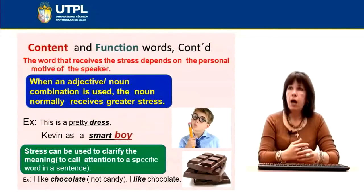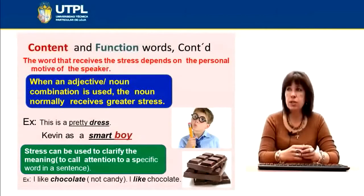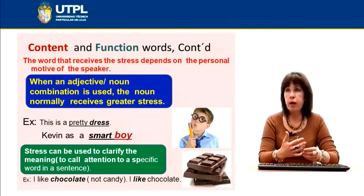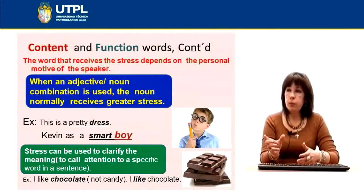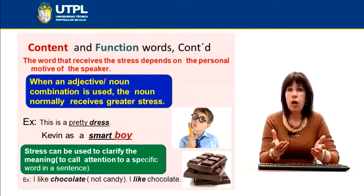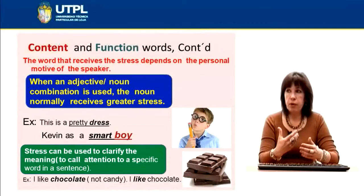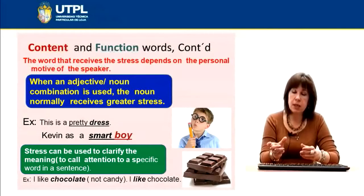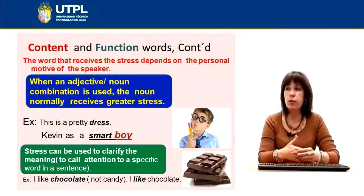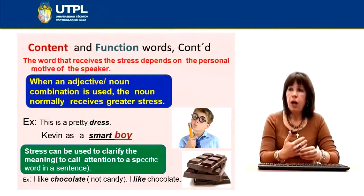The words that receive stress also depend on the personal motive of the speaker. When an adjective and noun combination is used, the noun normally receives the greatest stress. Both adjectives and nouns belong to the category of content words, but when used together, the noun takes greater stress. For example: 'This is a pretty dress' — both 'pretty' and 'dress' are content words, but 'dress' as the noun should be pronounced with a stronger stress. Stress can also be used to clarify meaning or call attention to a specific word.